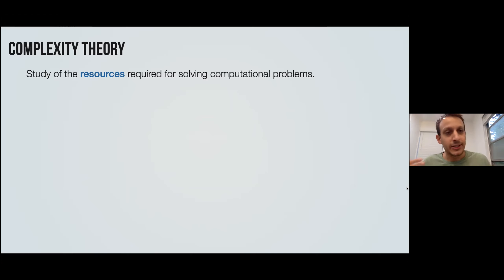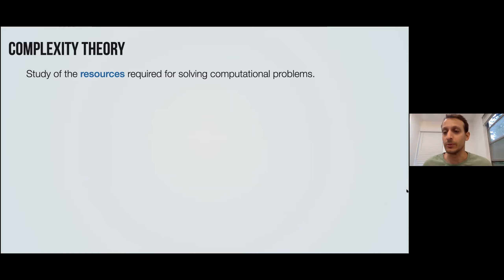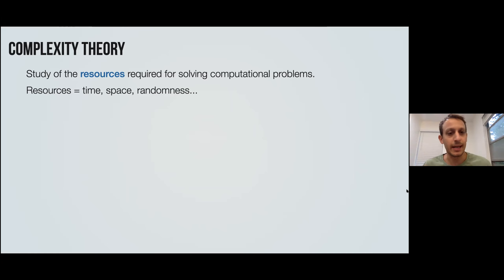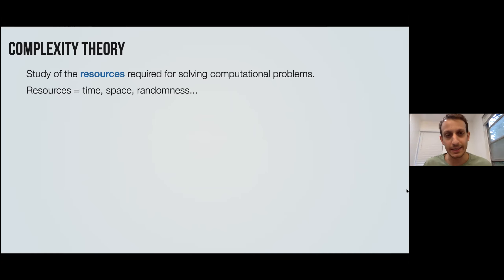Complexity theory in general — one way you can describe it is we study how many resources are required for solving problems. Resources can be many things like time, how much time the algorithm needs to run, space, how much memory the algorithm needs. Randomness is also a resource — we can ask how many random bits the algorithm needs, or maybe it doesn't need any random bits at all.